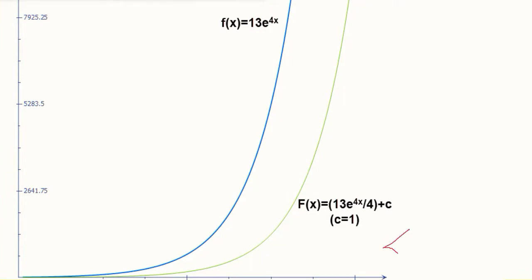This is the graph where x is the independent variable and y is the dependent variable. This is the actual function that we have integrated and this is the post integration result. Here we have assumed that c is equal to 1 for the sake of convenience.